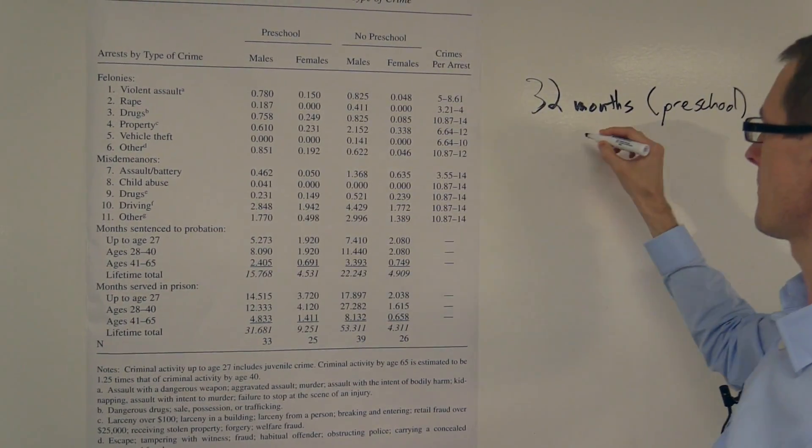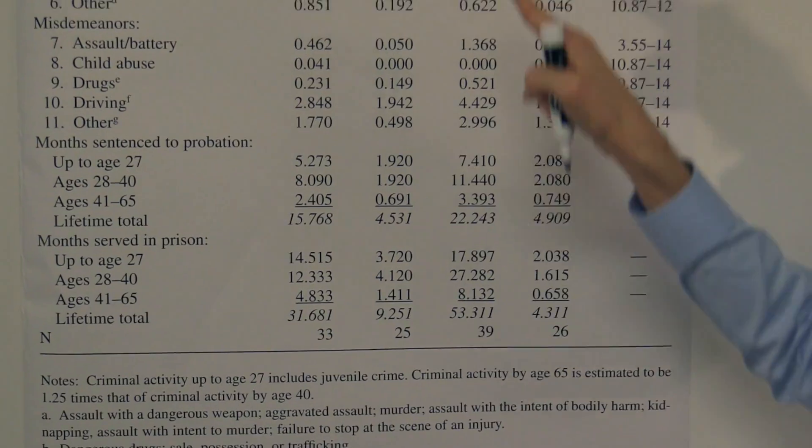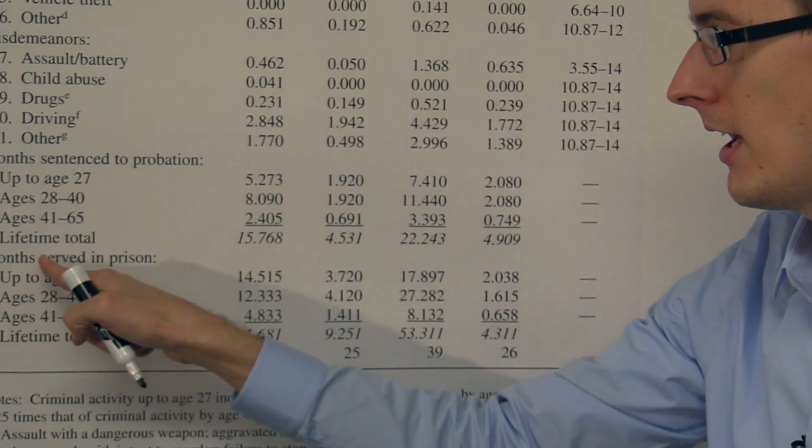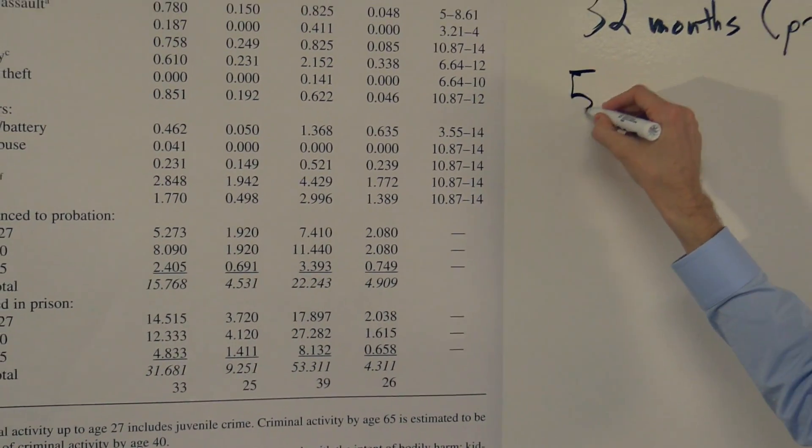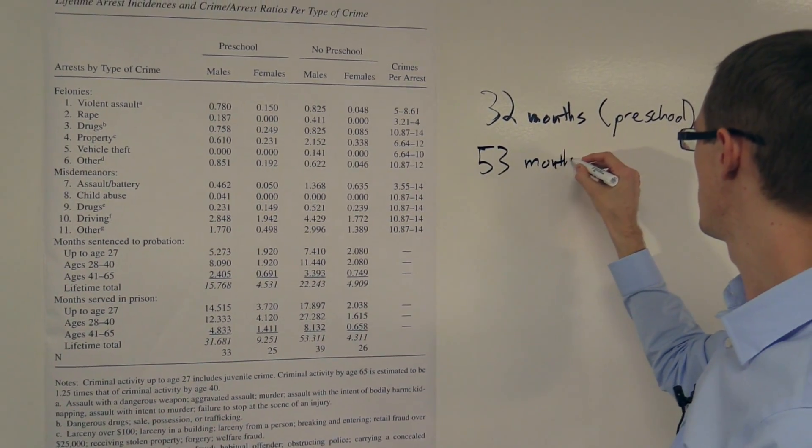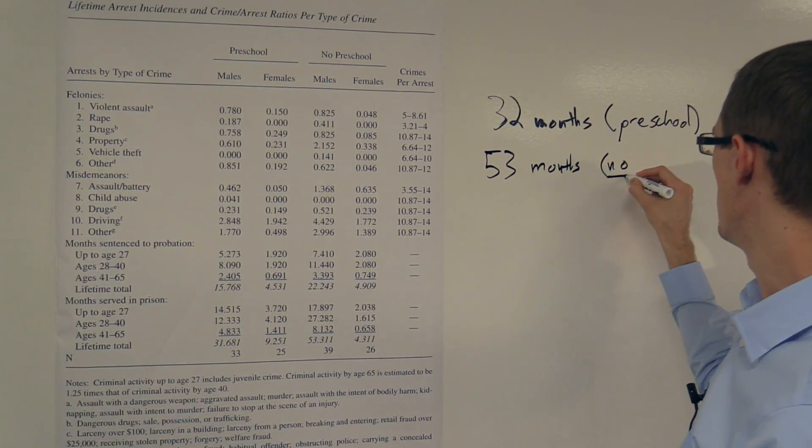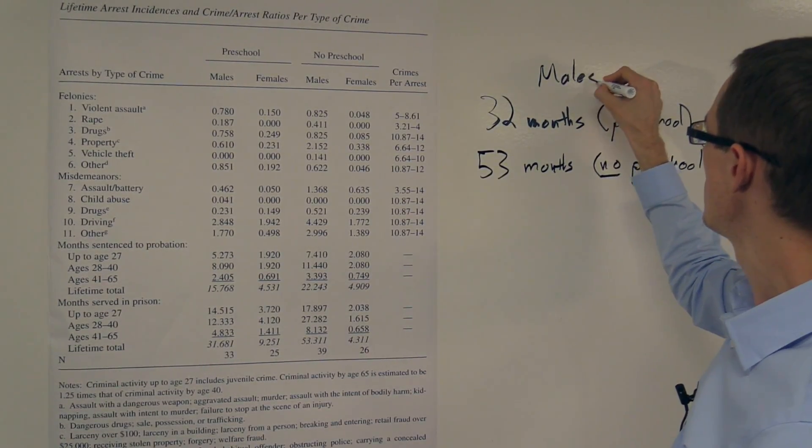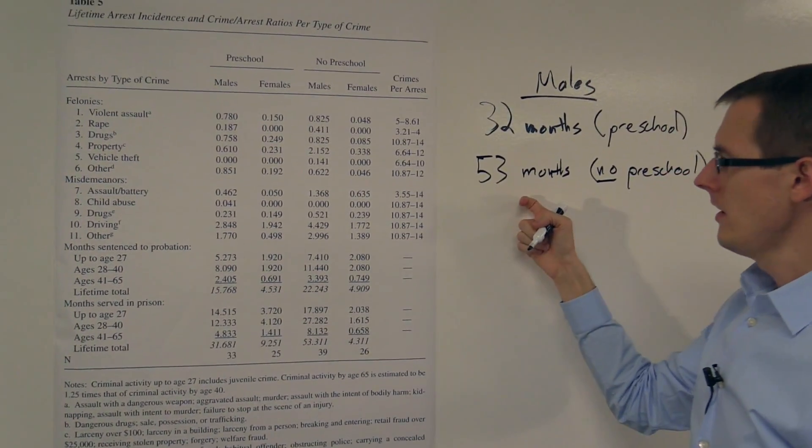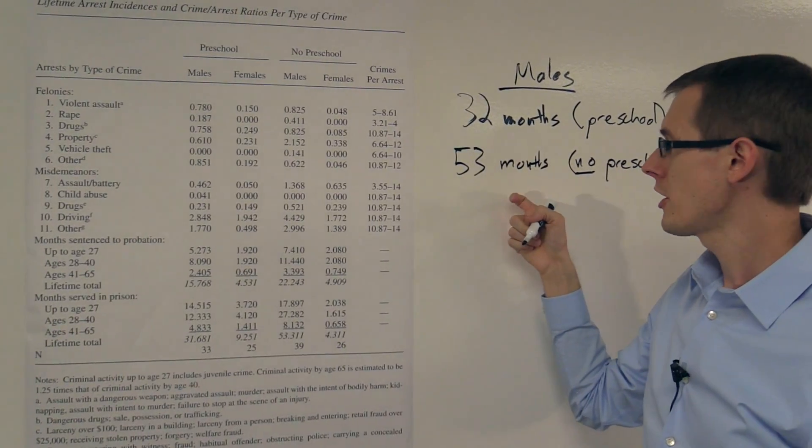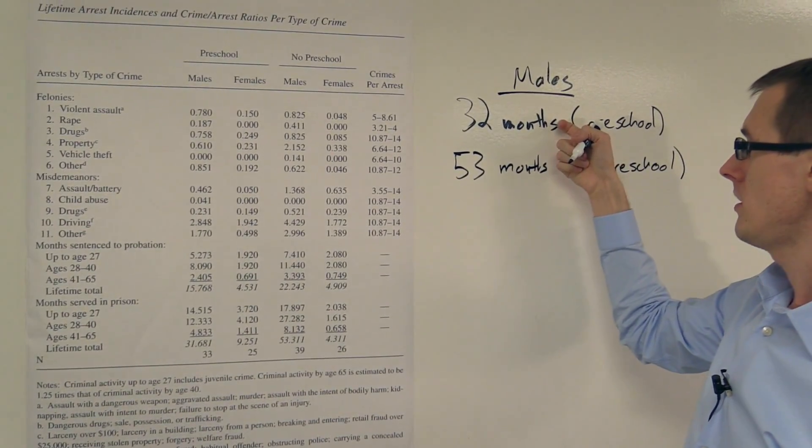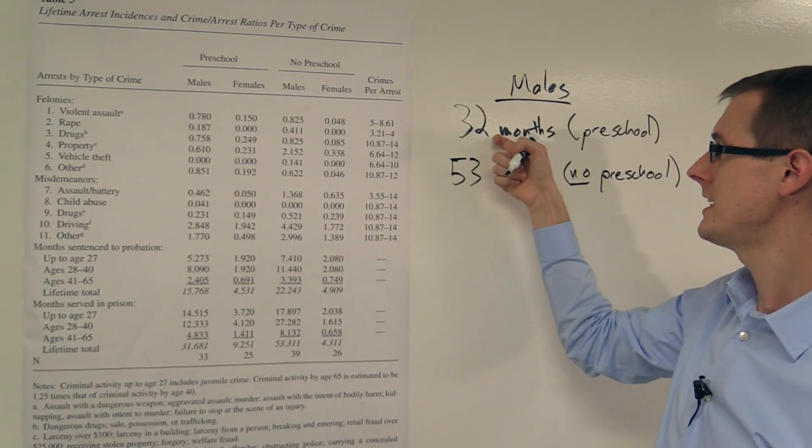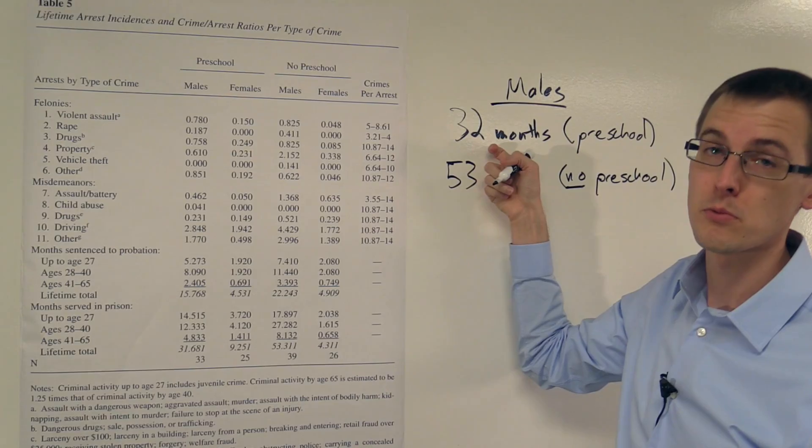So this is our treatment group. The males who did not go to preschool, they had an average of 53 months of lifetime served in prison, and this is the no preschool group, and it's for males. So we see that it looks like there's a very large treatment effect for going to preschool. It drops the average from 53 months served in prison over the course of your life down to 32 months. So that looks really good.